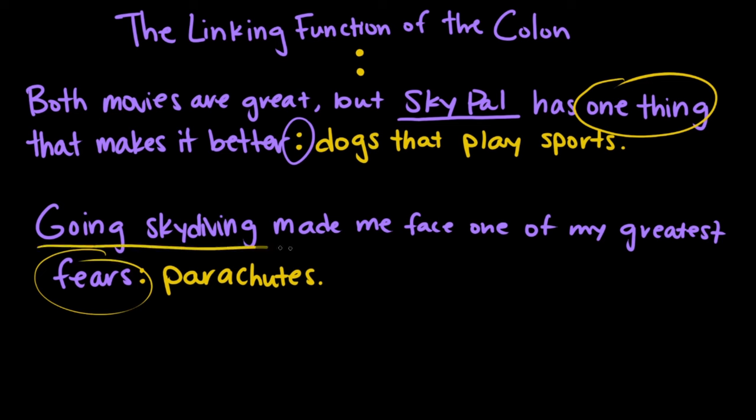The colon is here to link the whole independent clause to the word parachutes. I could just as well say, going skydiving made me face one of my greatest fears, period — that's a perfectly fine sentence. But without a colon linking to what that fear is, that sentence kind of just leaves us wondering.